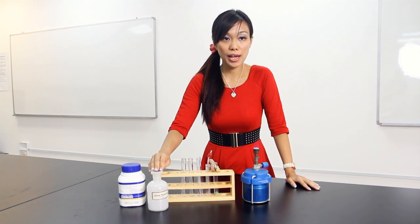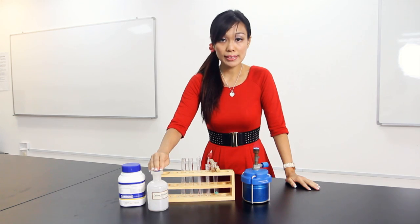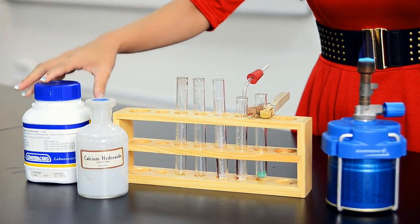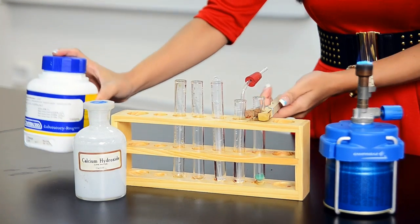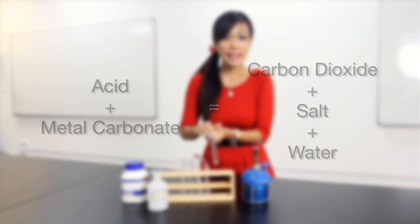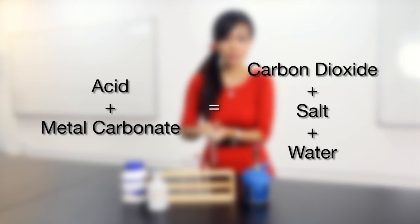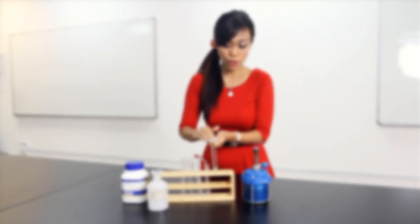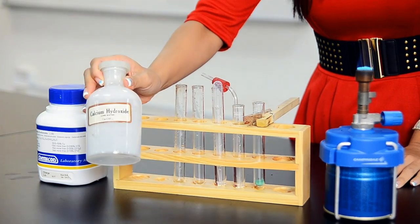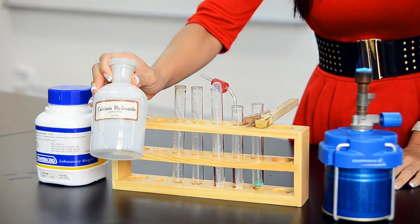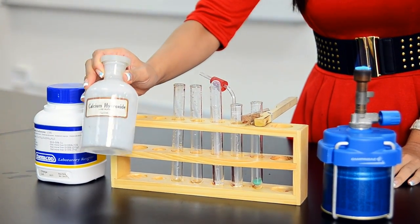A very important chemical reaction for acid is when acid reacts with metal carbonate. What I have with me here is copper carbonate — it's green in colour. When acid plus metal carbonate react, you will have carbon dioxide, salt and water produced. When carbon dioxide reacts with lime water, which is calcium hydroxide, you will see a white precipitate form.